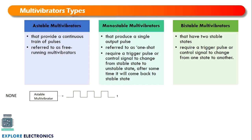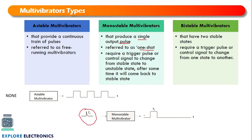The monostable multivibrator produces a single output pulse and is also referred to as a one-shot multivibrator. It requires an extra signal called a trigger pulse. Once the trigger pulse is given, it changes state from 0 to 1 — from stable to unstable — and after some time returns to the stable state again.